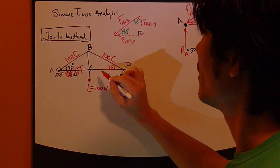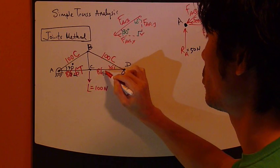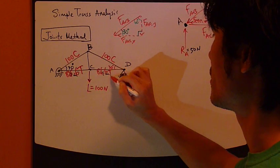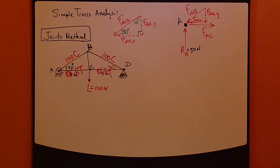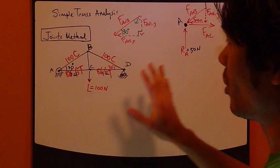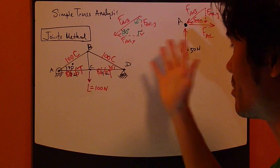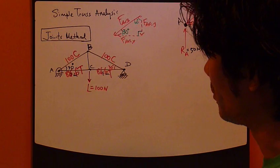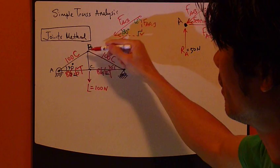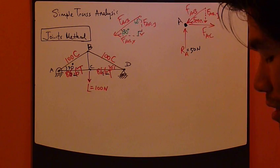Same thing - AC is the same as CD. It's under 86.6 Newton tension. So that's the beauty of this truss analysis. If it's symmetrical, you only have to calculate one half of it. The other half is just simply a mirror image. So now, the only thing left to calculate is the FBC.